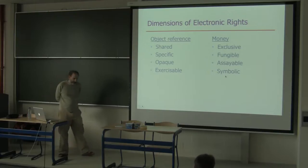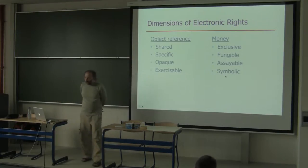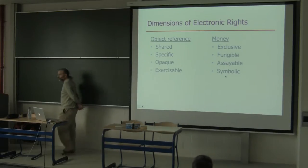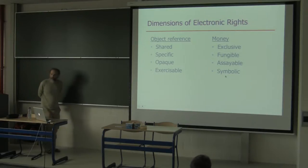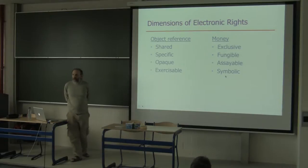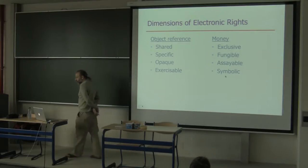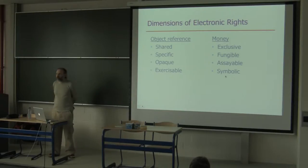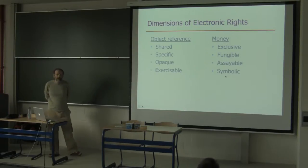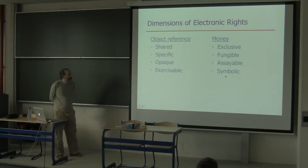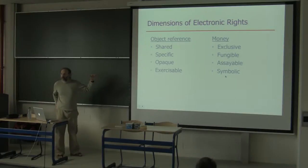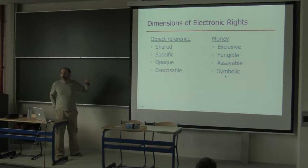What you've seen here is more than just building money out of objects. It's building a very different kind of right out of an underlying kind of right. Money is a kind of right with certain particular properties; an object reference is a kind of right with very different properties. By comparing and contrasting them, we realize the differences teach us about four dimensions on which electronic rights can differ — giving us a start on a taxonomy of kinds of electronic rights.